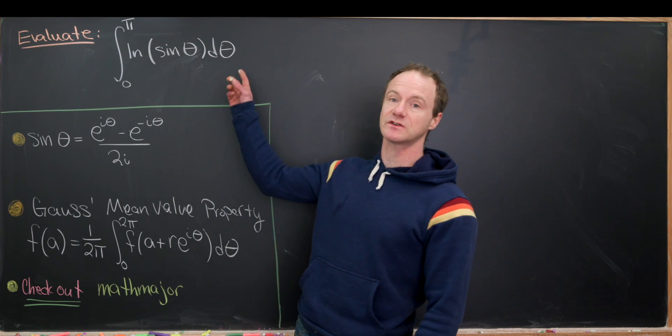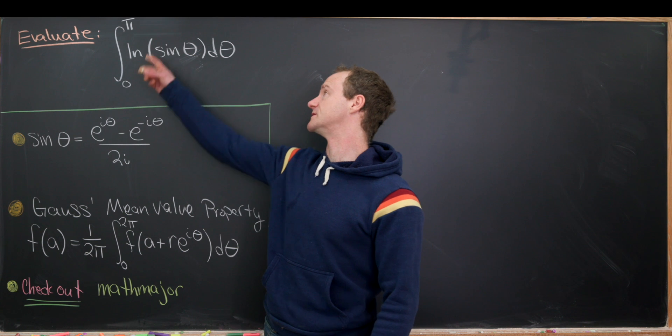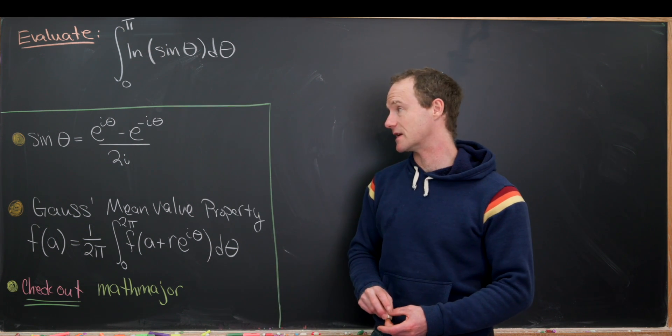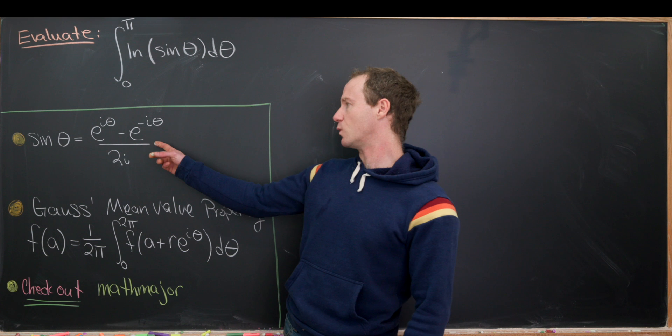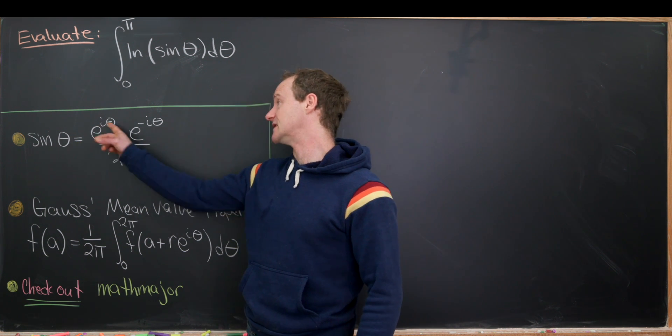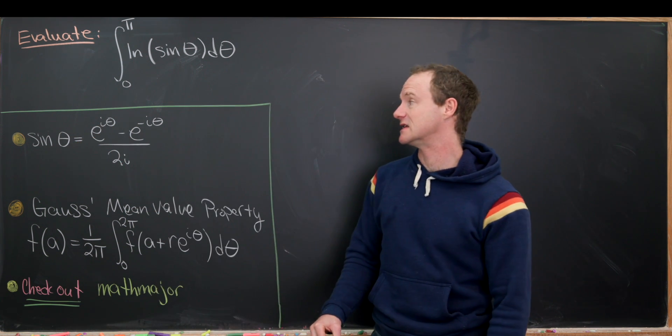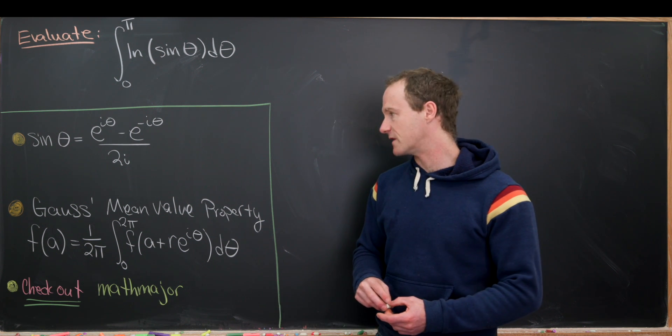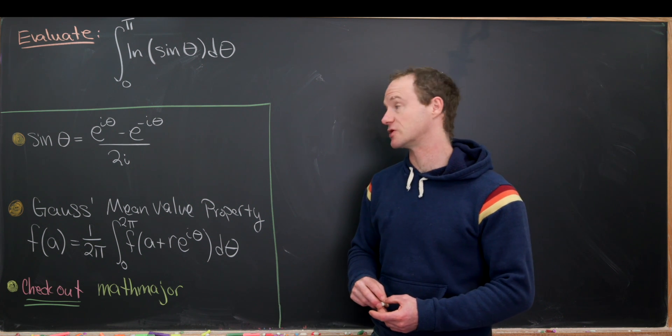So in particular today, we want to look at the integral from 0 to pi of the natural log of sine theta d theta. And we're going to use a fairly well-known result, which is that sine of theta equals e to the i theta minus e to the minus i theta over 2i. So maybe we would call that the complex exponential version of the sine function.